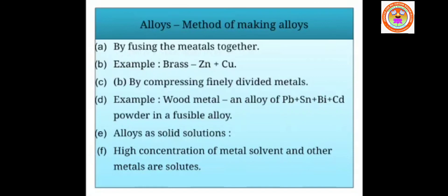Today we have learnt the types of ores, the extractive metallurgy of iron, physical and chemical properties of iron, and alloys. When talking about alloys, we should know what an amalgam is. Amalgam is an alloy formed when a metal is mixed with mercury. Examples include silver amalgam, tin amalgam, zinc amalgam, and copper amalgam. Thank you, children.